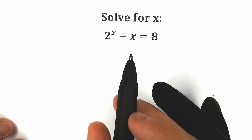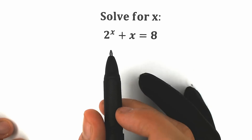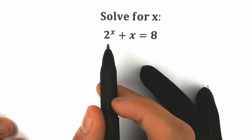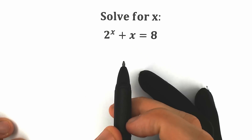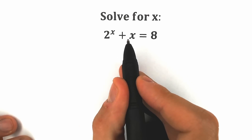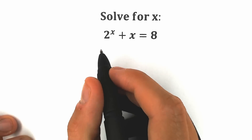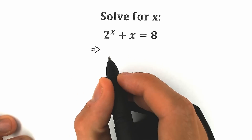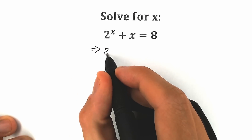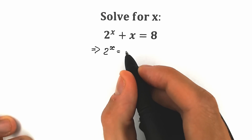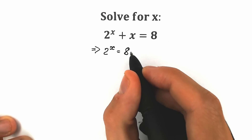So let's try to solve it. We need to find our x. We have 2 to the x plus x equal to 8, and we need to find x. First of all, let's bring this x from our left side to the right side. As a result, we have 2 to the x equal to 8 minus x.